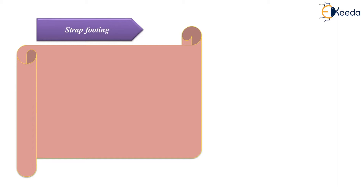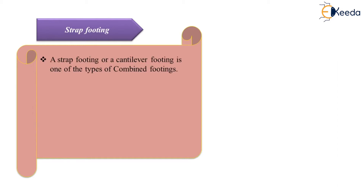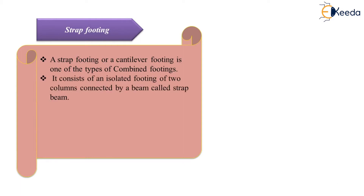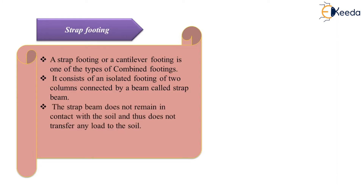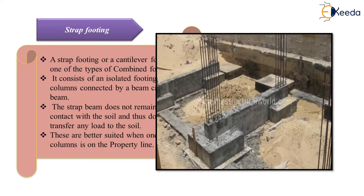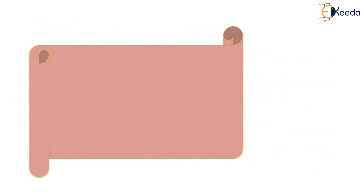The next type is strap footing, also called cantilever footing, which is one of the types of combined footing. It consists of isolated footings of two columns connected by a beam called a strap beam. The strap beam does not remain in contact with the soil and thus is not used to transfer any load of the superstructure to the soil. These are better suited when one of the columns is on the property line. In this picture, you can see the column near the property line with a strap beam that is not in direct contact with the soil.